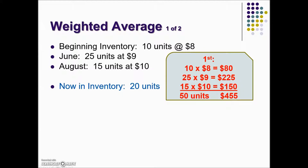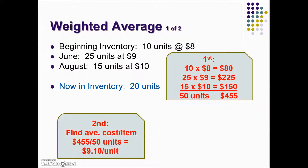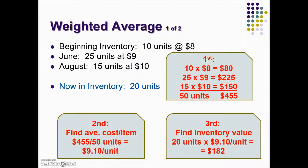Next, we want to find the average cost per unit by dividing the total cost by the total number purchased. So we take $455 divided by 50, which gives us a weighted average of $9.10 per unit. The inventory value is then found by taking that average cost times the number of units currently in inventory. This gives the weighted average value of the remaining inventory.